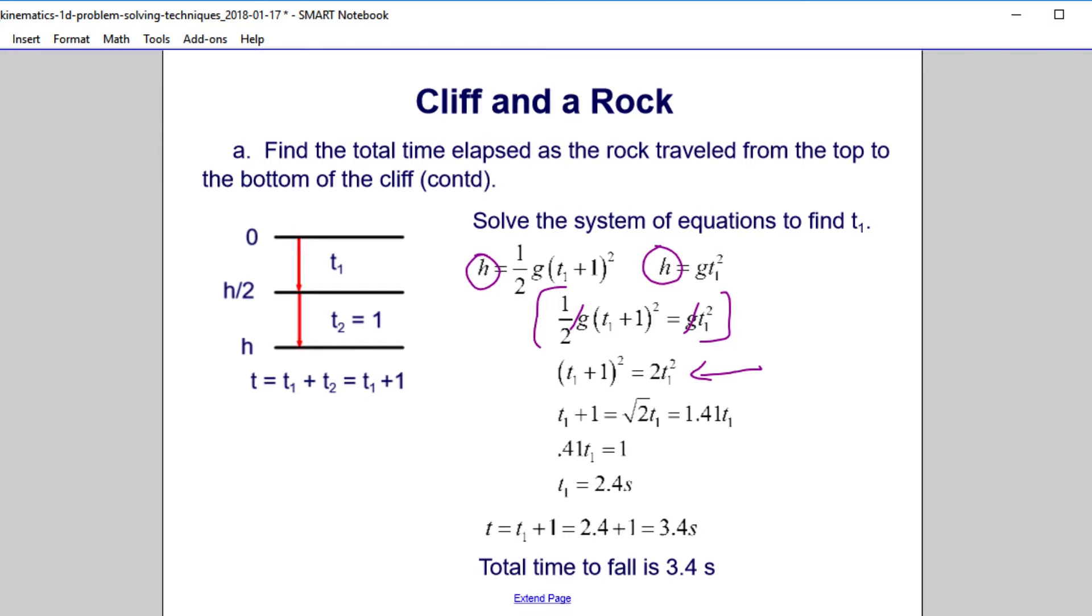And then since both sides are squared, we'll take the square root of both sides. Whatever we do to one side, we do to the left. We get t1 plus 1 is the square root of 2 times t1. We take that out to three decimal places, do a little algebra, and we have t1 is 2.4 seconds. We add that to 1, right, and the total time to fall is 3.4 seconds.